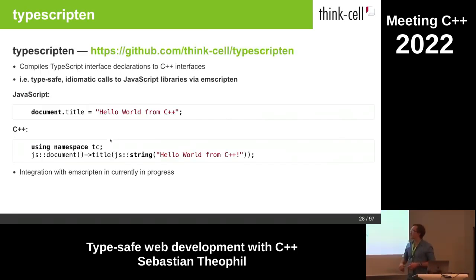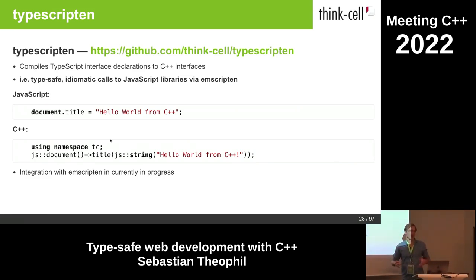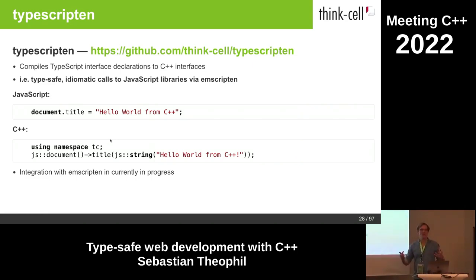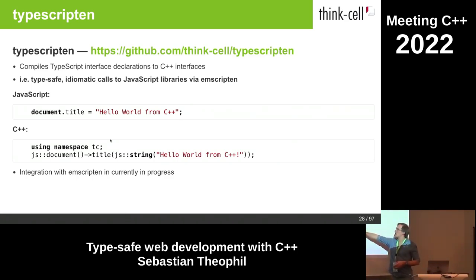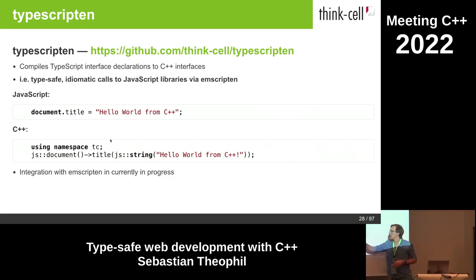This is where my TypeScript tool comes in. It compiles TypeScript interface declarations to C++ interfaces, so we can make somewhat idiomatic calls to JavaScript libraries from C++ with a syntax similar to JavaScript. Where in JavaScript you might assign a string to the title property of a document, in C++ you pass a string to the title function.